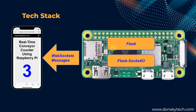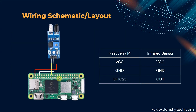As you can see in here, the Raspberry Pi is sending WebSocket messages into our browser on our mobile phone so that it will increase the count of our counter. For the wiring and schematic layout, it's actually just easy to connect the VCC of the Raspberry Pi to the VCC of the infrared sensor. The ground is to ground and the GPIO23 to the output pin of our IR sensor. And that's all for the wiring schematic layout.